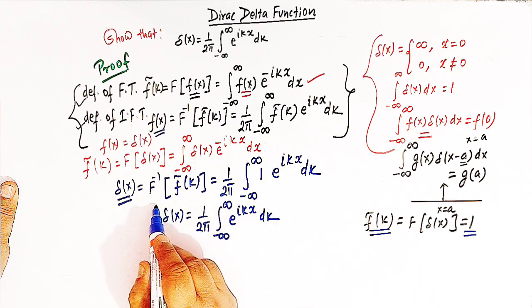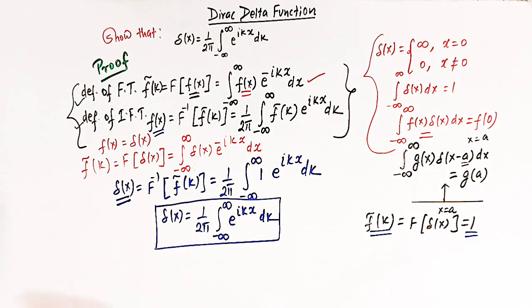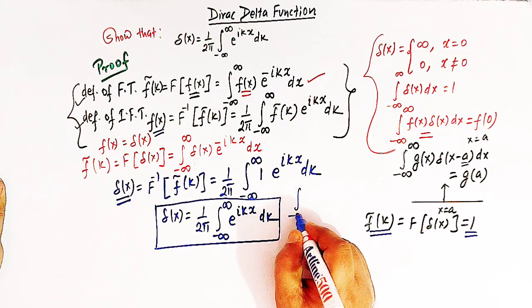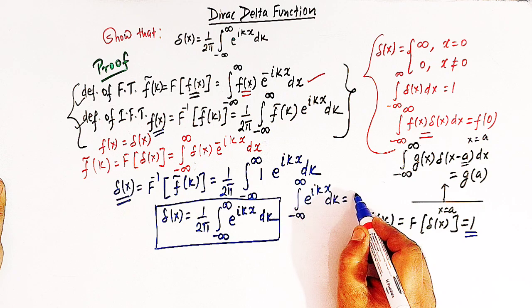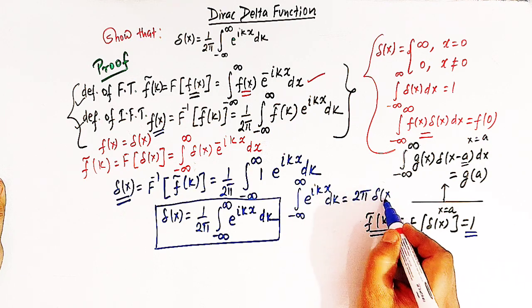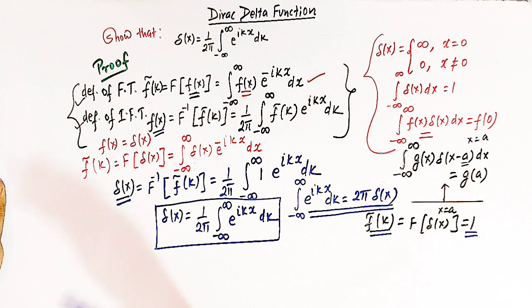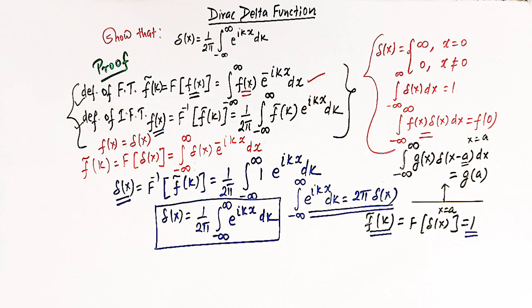So delta of x equals 1 over 2 pi times the integral from minus infinity to infinity of e raised to ikx dk. This is the required representation of the direct delta function. We can also write an alternate form by multiplying both sides by 2 pi: the integral from minus infinity to infinity of e raised to ikx dk equals 2 pi times delta of x. This is how we obtain this expression using the Fourier transform and the inverse Fourier transform.